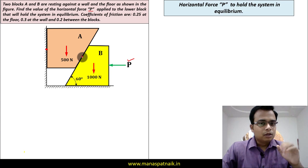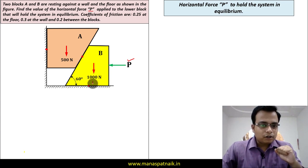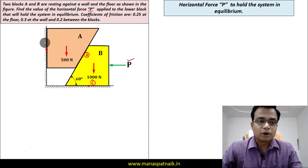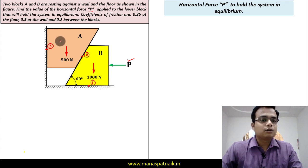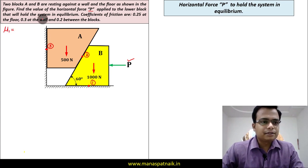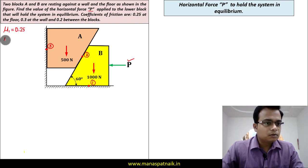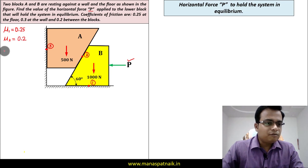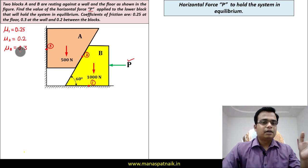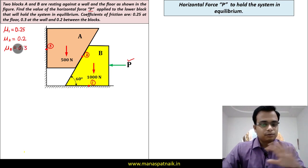Let me write down all the points of contact. Point 1 is between block B and the ground or floor. Point 2 is between the two blocks. Point 3 is the contact of block A with the wall. The coefficients of friction are: μ1 = 0.25 at the floor, μ2 = 0.2 between the blocks, and μ3 = 0.3 between block A and the wall.